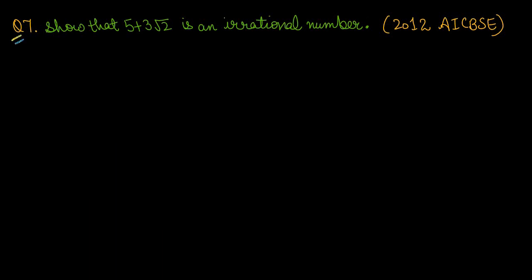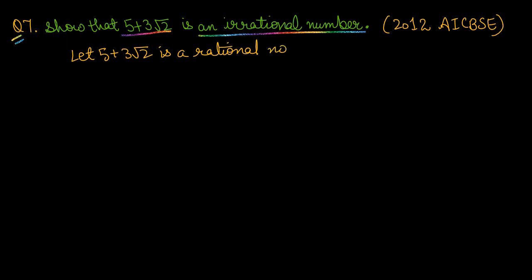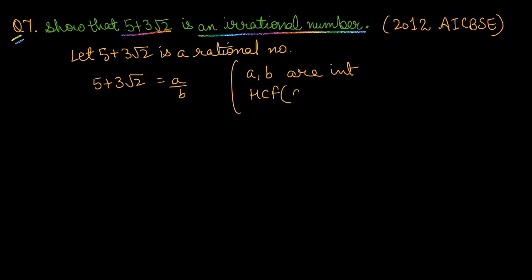Question number seven: Show that 5 + 3√2 is an irrational number. We assume the opposite — let 5 + 3√2 be a rational number. Then it can be written as a/b, where a and b are integers and HCF(a, b) = 1, meaning they are co-prime.